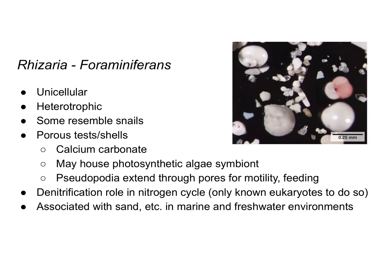Starting with the foraminiferans, these are unicellular protists that are heterotrophic, meaning they eat other organic compounds or organisms. Some resemble snails, as you can see in this picture, with elaborate shells made of calcium carbonate. Interestingly, these shells are porous, so the amoeba-like protist inside can extend its pseudopodia out through the pores in order to move around or capture prey.